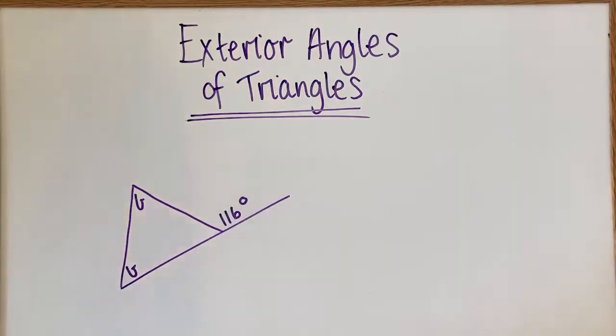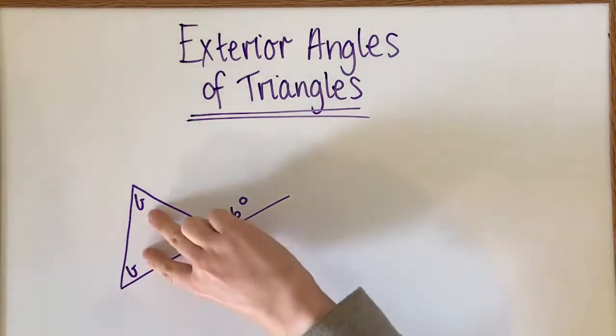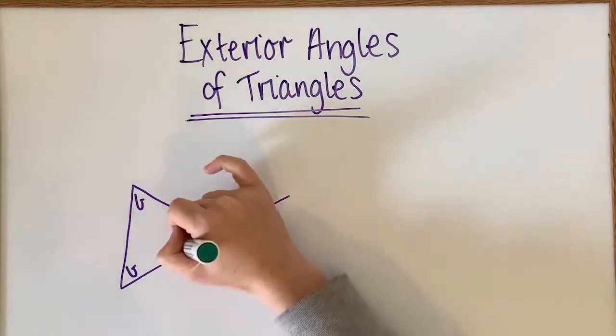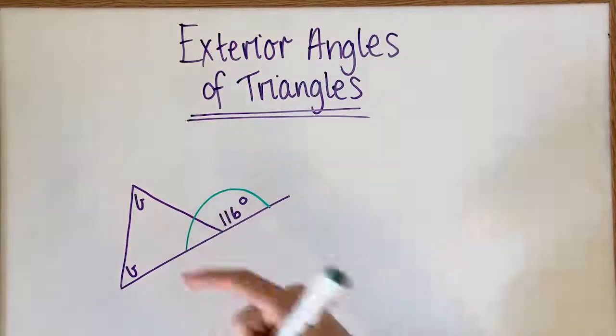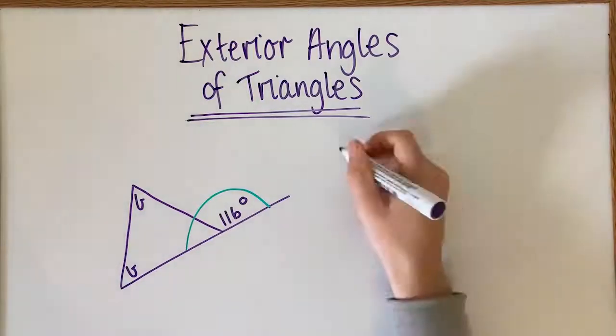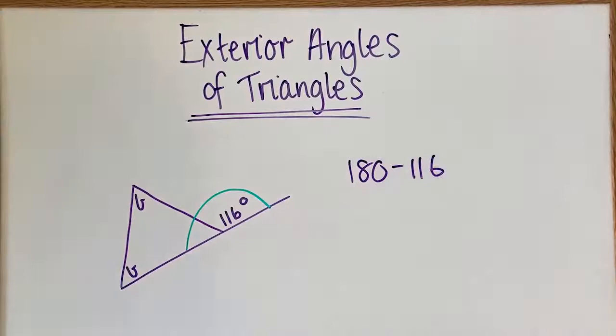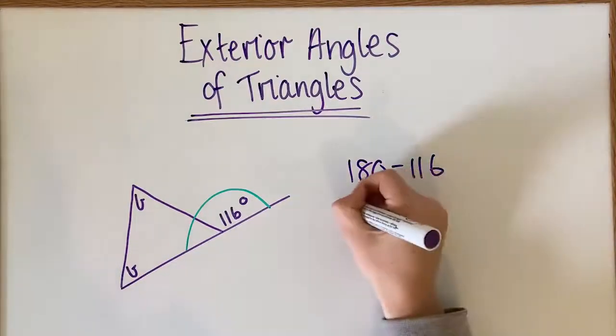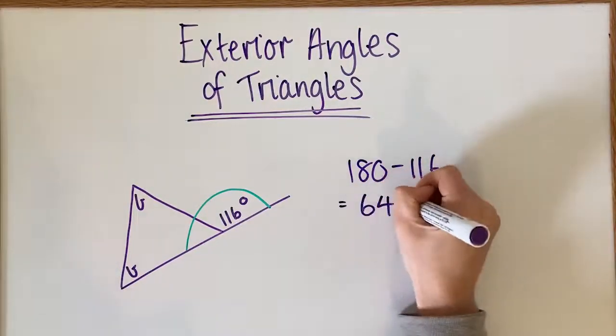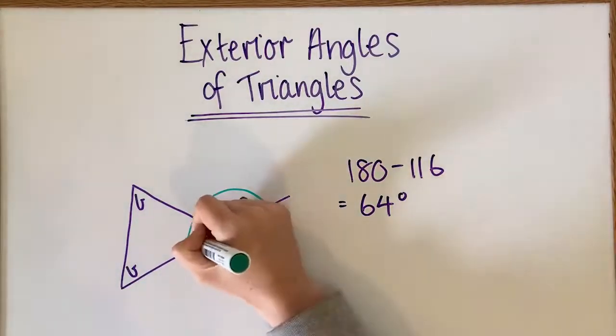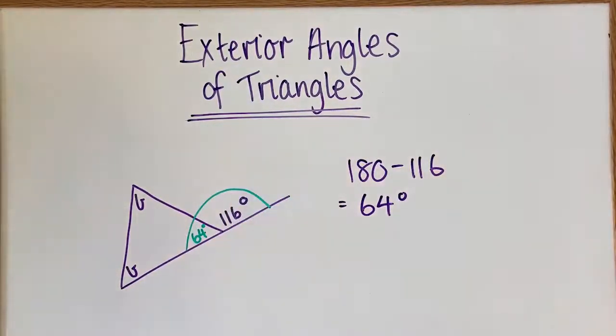For this question, we're trying to find B. You can see that these are both the same angle. The first thing we need to do is use our knowledge of this straight angle to find the unknown. We're going to go 180 minus 116, and that equals 64 degrees. I'm going to write that here so we don't forget.